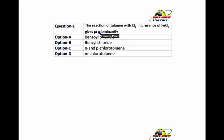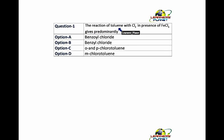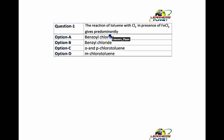This was the 11th question of that paper — we have already solved around 10 questions. The question is: the reaction of toluene with chlorine in the presence of FeCl₃ gives predominantly. The reaction is taking place in the presence of FeCl₃.